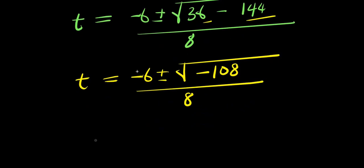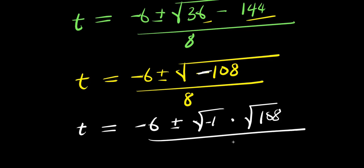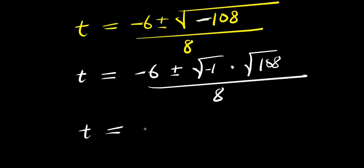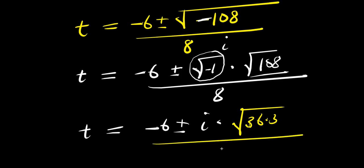Since we have a negative under the square root, we factor out square root of negative 1, giving: negative 6 plus or minus square root of negative 1 times square root of 108, divided by 8. We express 108 as 36 times 3, so square root of 108 equals square root of 36 times square root of 3.